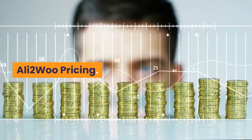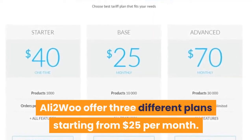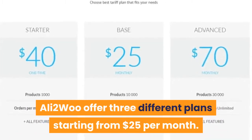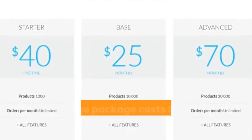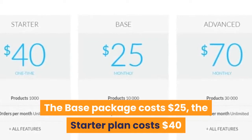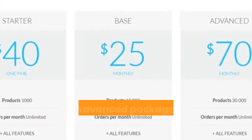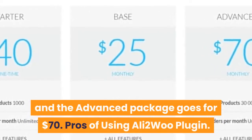Ali2Woo pricing: Ali2Woo offers three different plans starting from $25 per month. The base package costs $25, the starter plan costs $40, and the advanced package goes for $70.